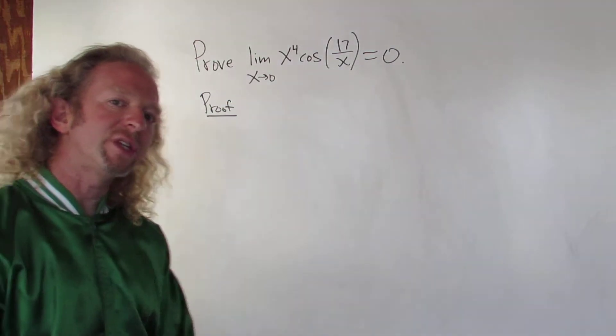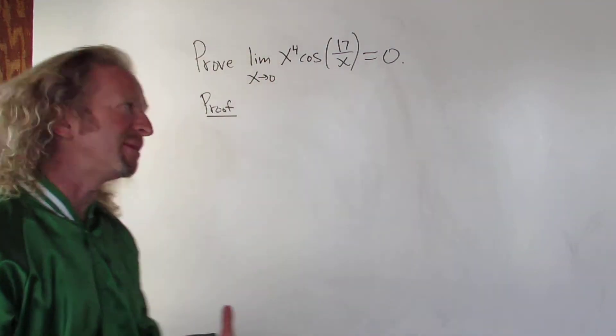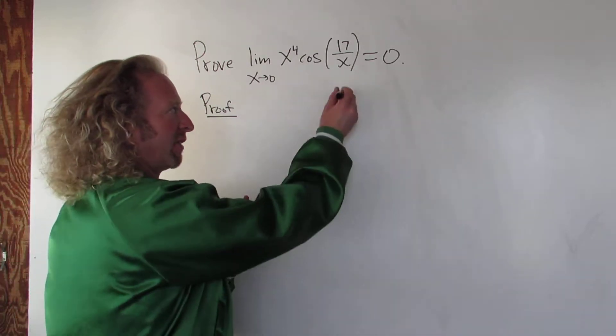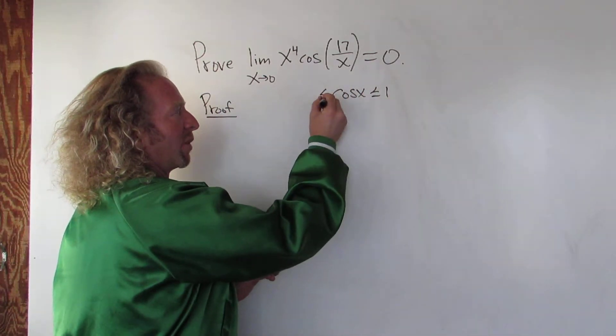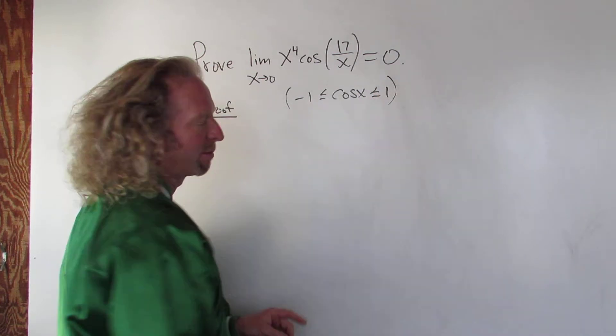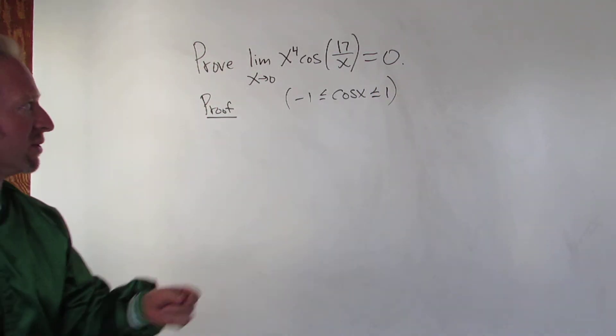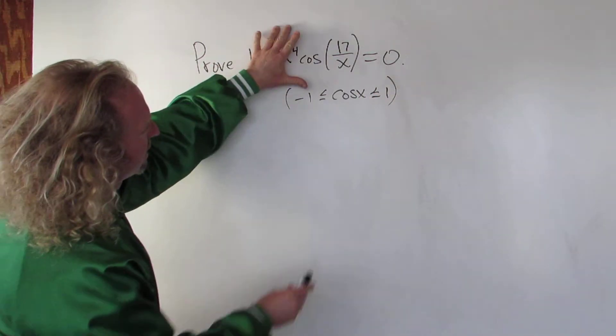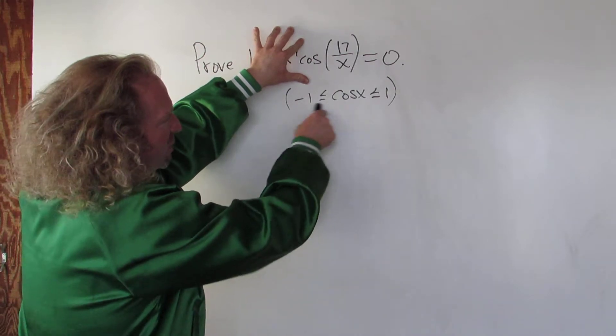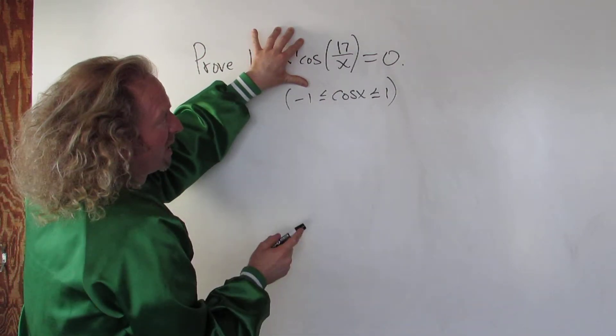The cosine function is bounded by 1. So what does that mean? It means that the cosine of x for any x is less than or equal to 1 and greater than or equal to negative 1. So this is not part of the proof, but it's a fact we're going to use. That means that the cosine of 17 over x is between these numbers as well. Here x can be any number.